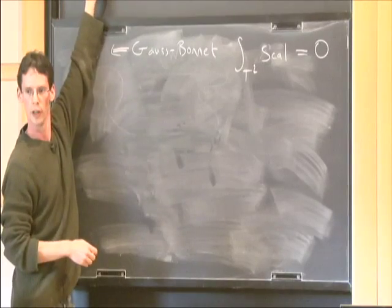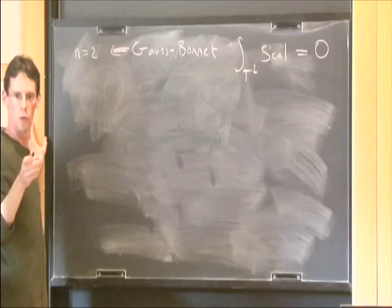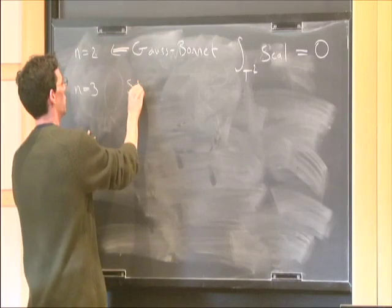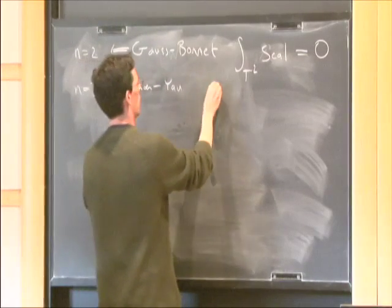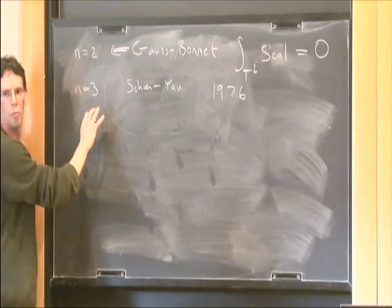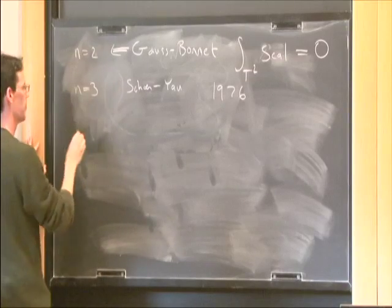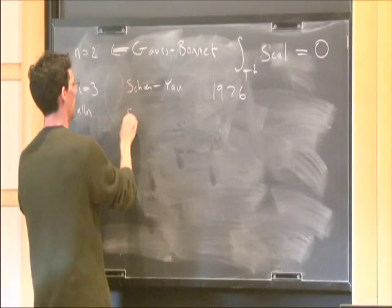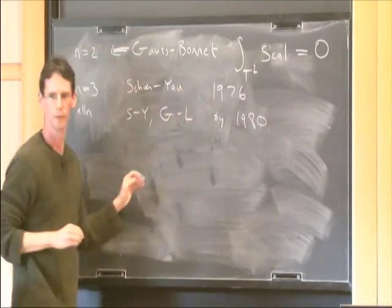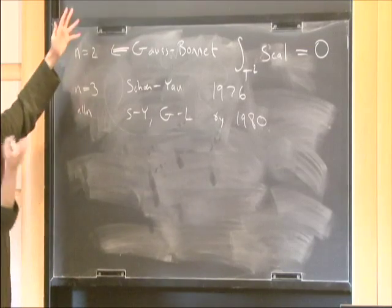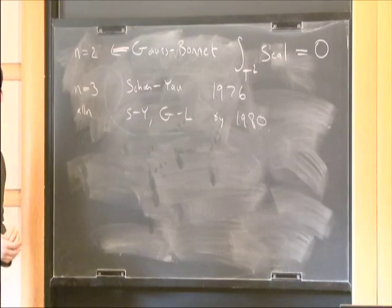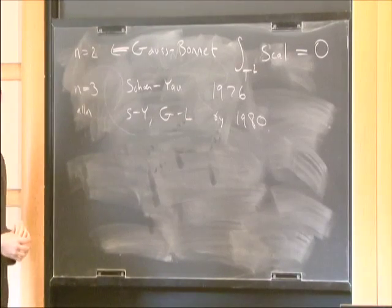The Geroch conjecture has been proven. n=3 was proven by Schoen and Yau in 1976, and that was the breakthrough — after that, all dimensions followed quickly. All dimensions were handled by Schoen and Yau and Gromov and Lawson by 1980. There's some analogy between this conjecture becoming harder at three dimensions and the systolic inequality being harder in three dimensions.